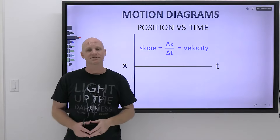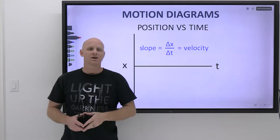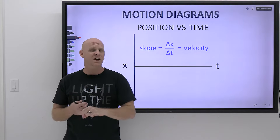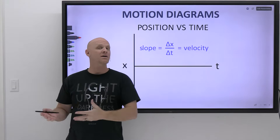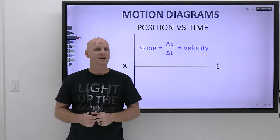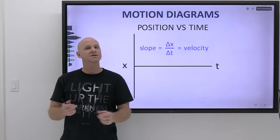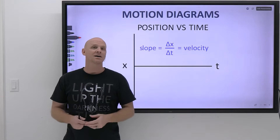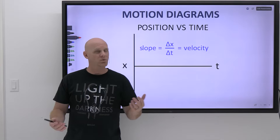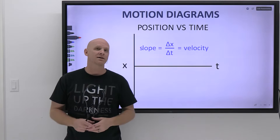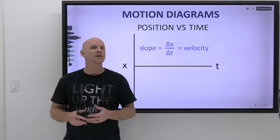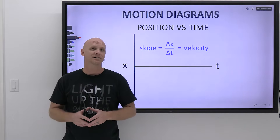Physics motion diagrams are going to be the topic of this lesson. We're going to go through position versus time and velocity versus time, and compare and contrast. The fact that there are two different diagrams that tell you different things, even though they're similar, makes it a little confusing. We'll also spend a little time talking about acceleration versus time as well.